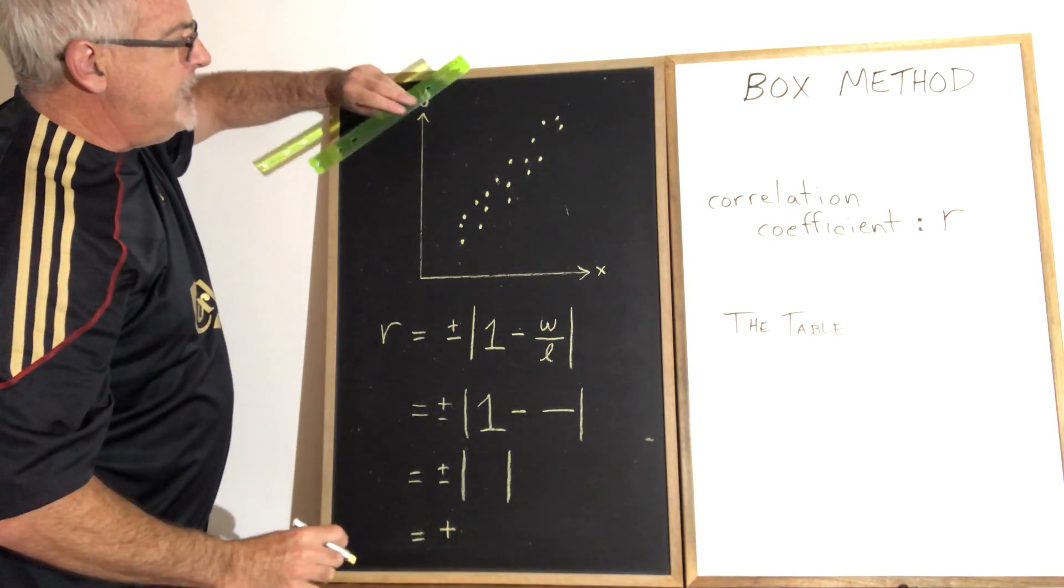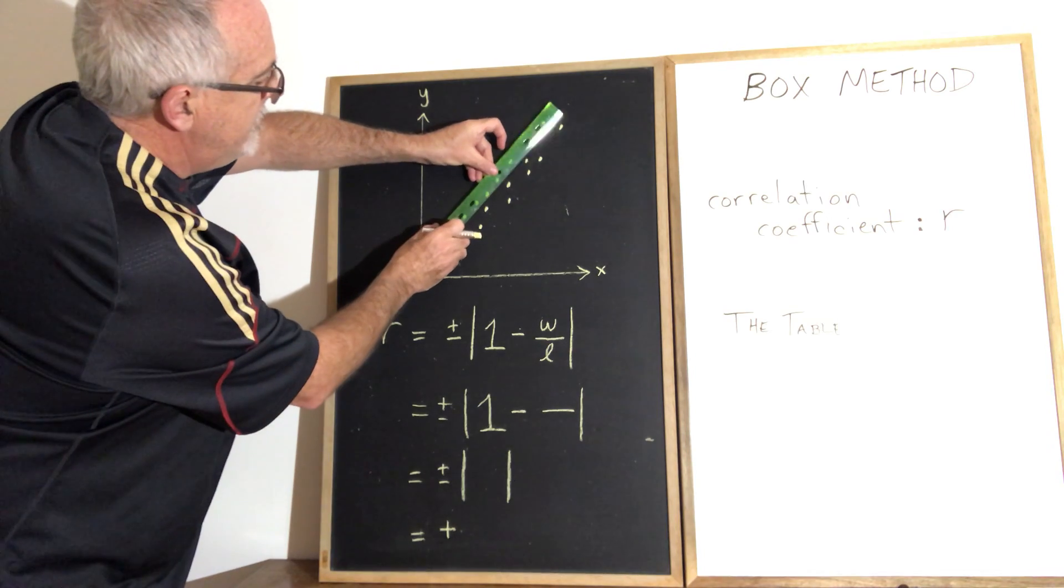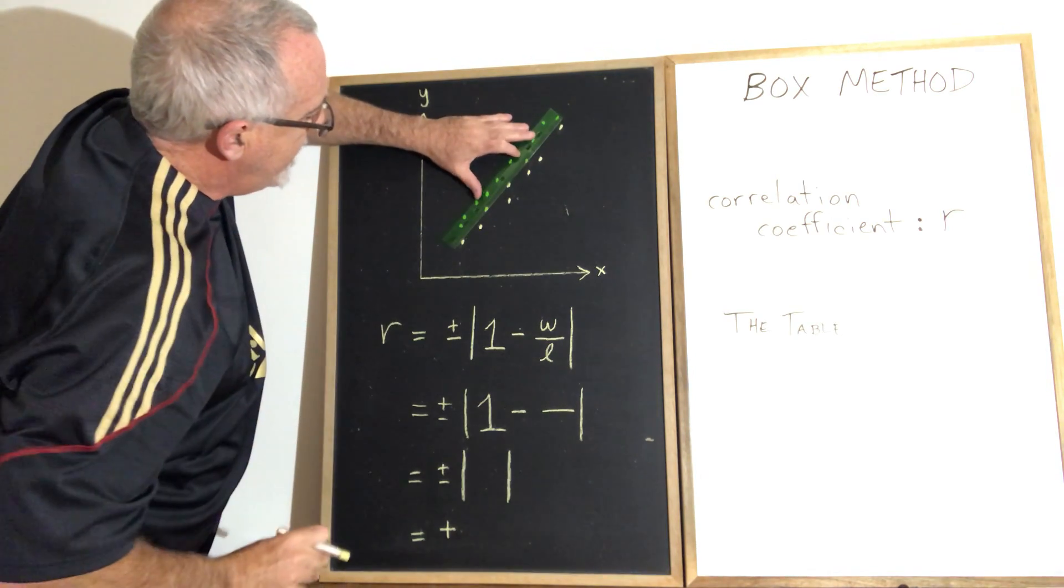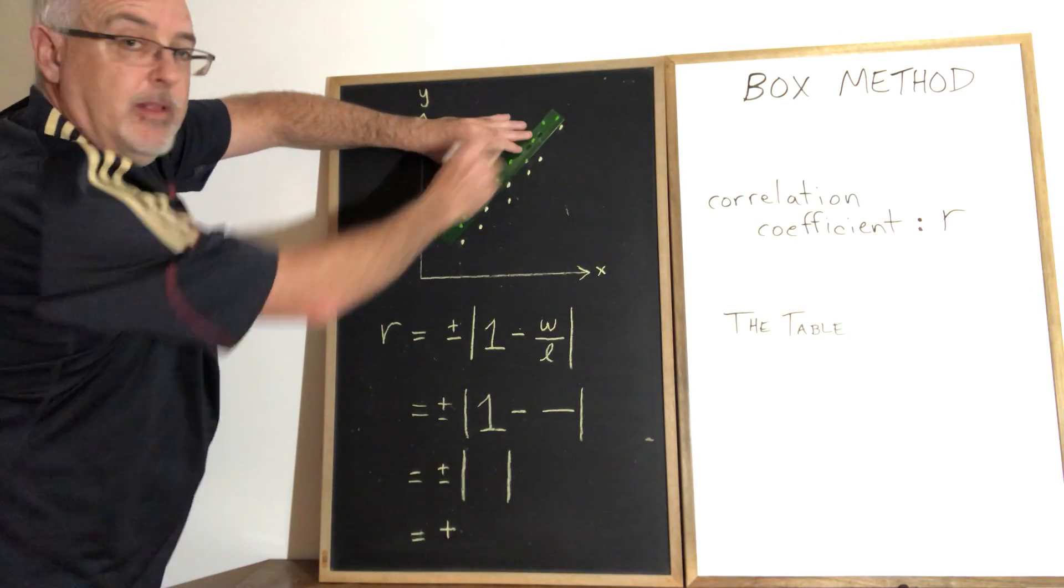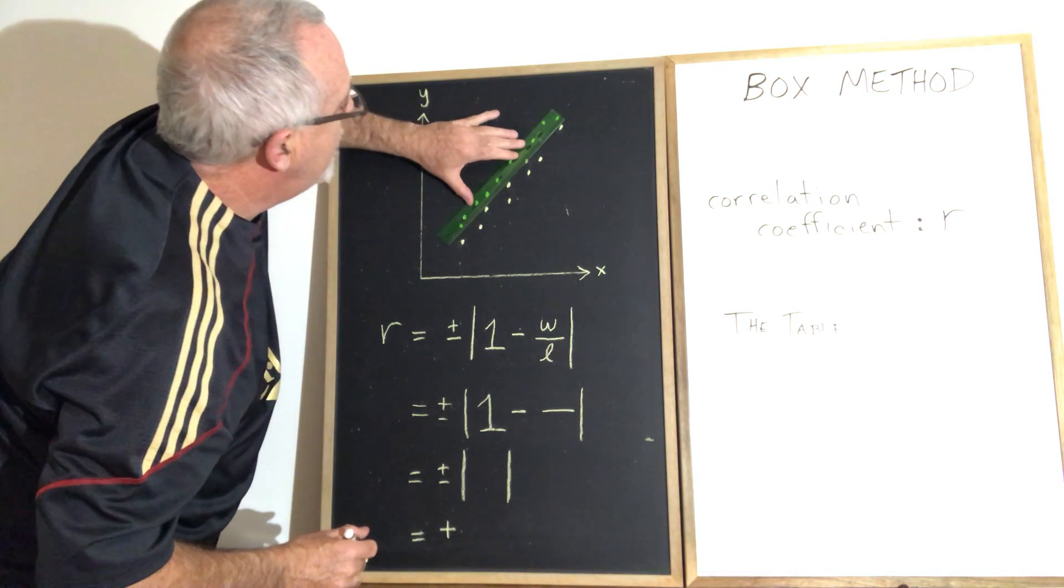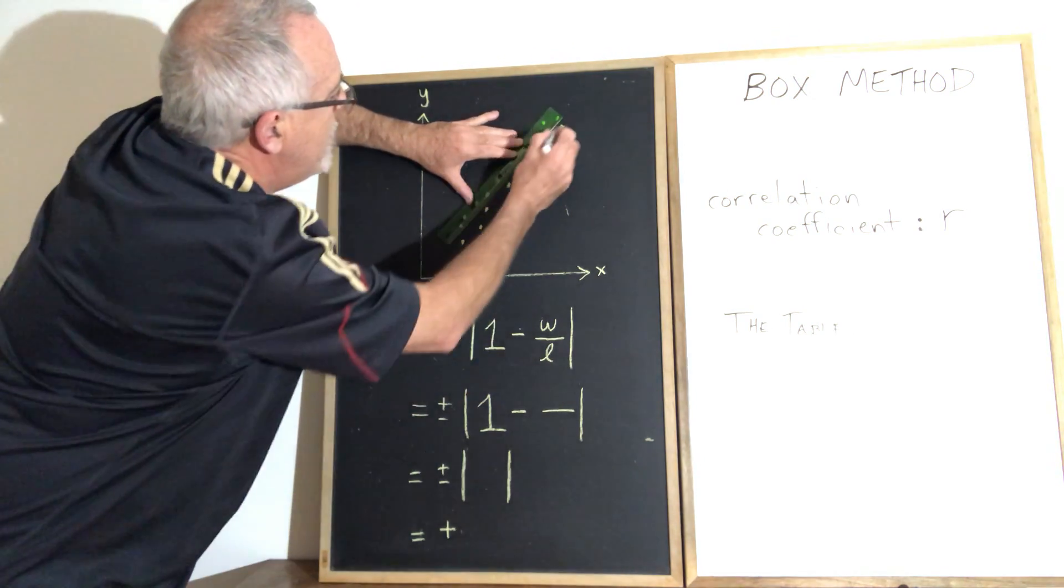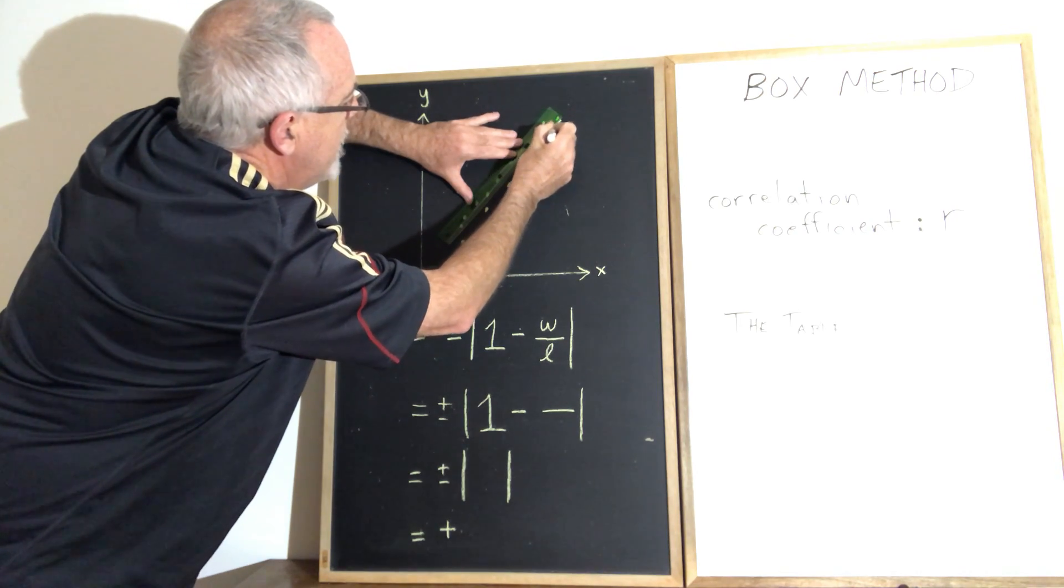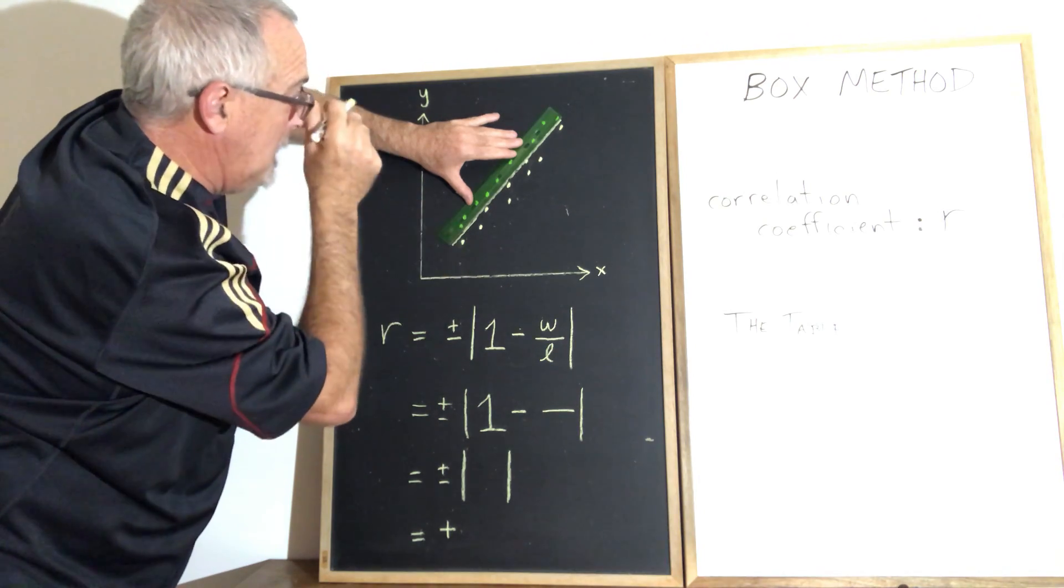To draw the line of best fit, I get my ruler so that it goes across roughly the middle of all the points. What you want is to make sure half of the points land above the line you're drawing and the other half land below. The way I have my ruler set up right now, I'm able to draw a line that has half the points above and half below.